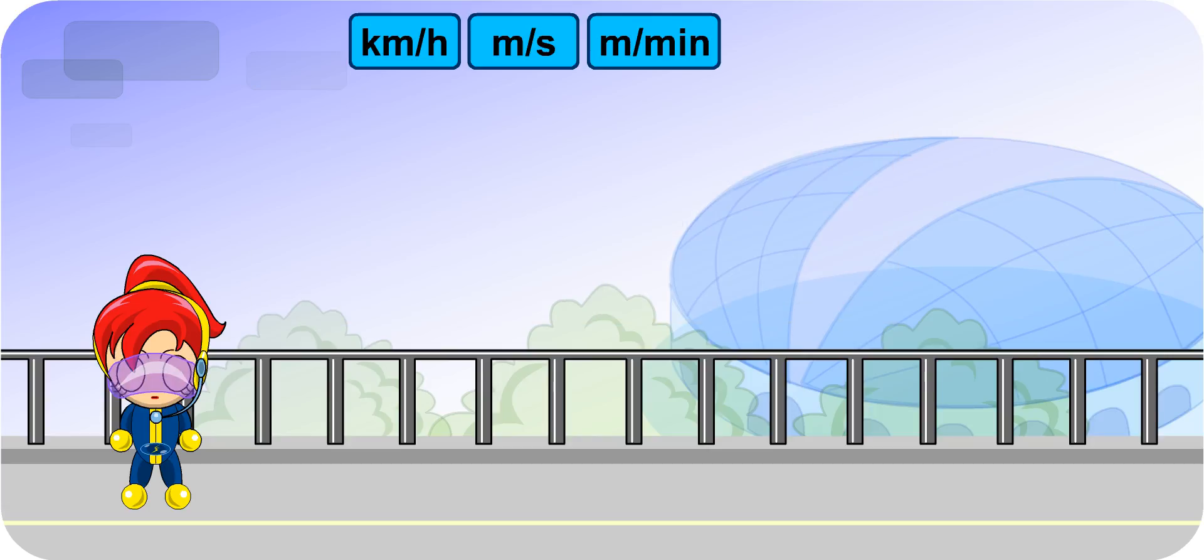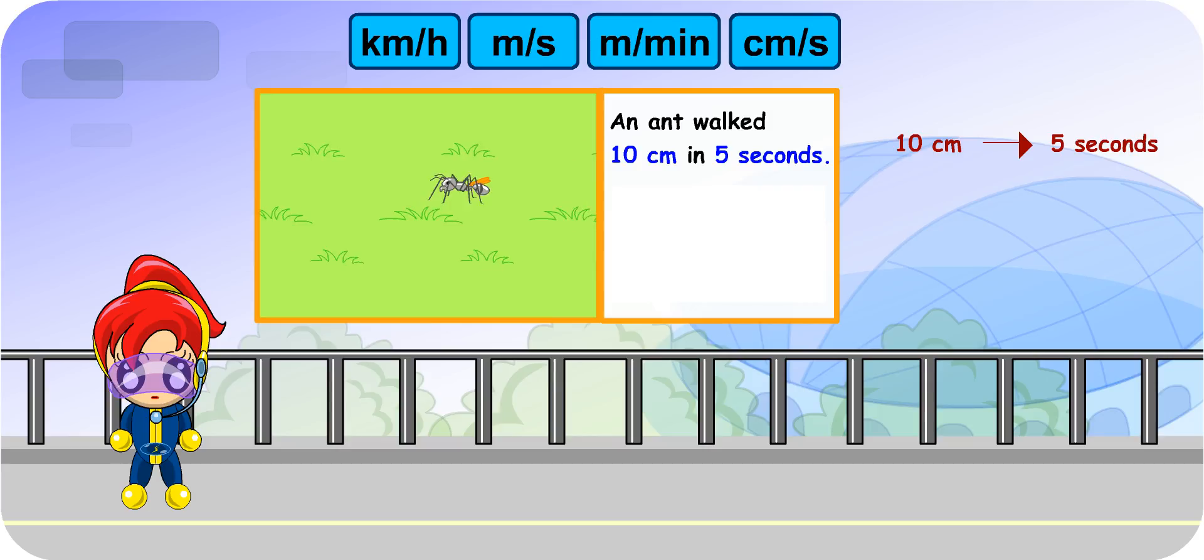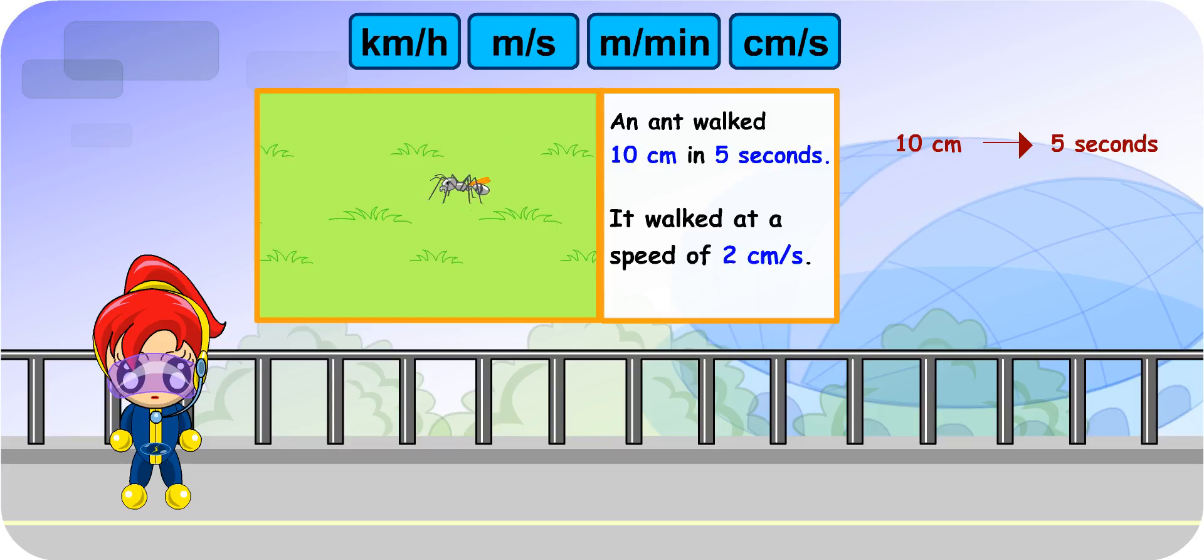Besides meters per second and meters per minute, we can also use centimeters per second to describe speed. For example, an ant walked 10 cm in 5 seconds. In other words, the ant walked at a speed of 2 cm per second.